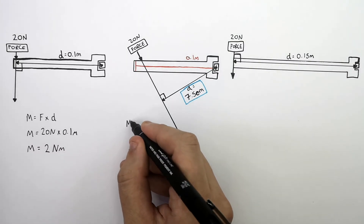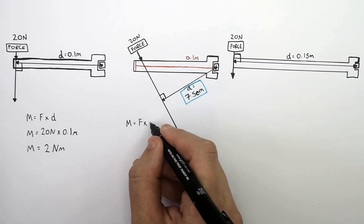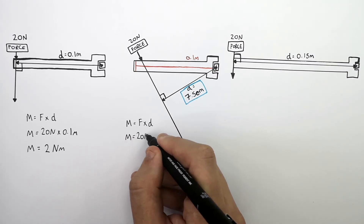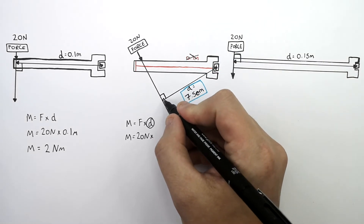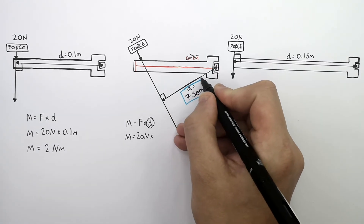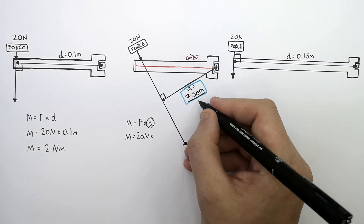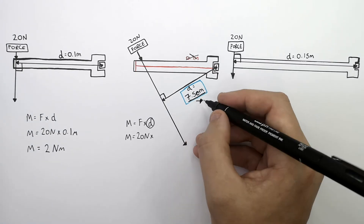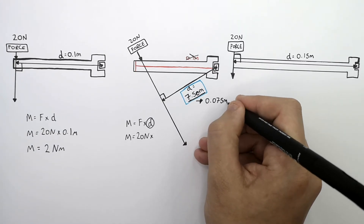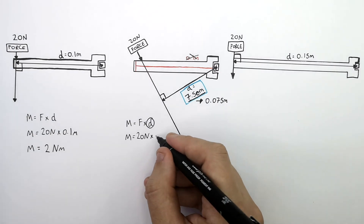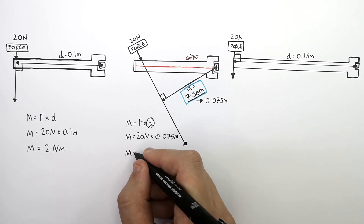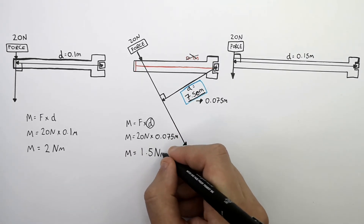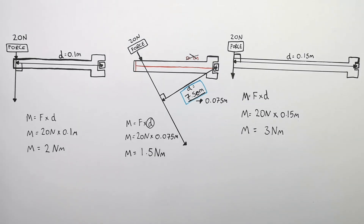To calculate the anti-clockwise moment, recall M equals F times D. M equals 20 Newtons times D — but it's not the distance of the spanner handle; it's the perpendicular distance from the line of action of the force to the pivot, which is 7.5 centimeters. Converting 7.5 centimeters to 0.075 meters: M equals 20 Newtons times 0.075 meters, giving an anti-clockwise moment of 1.5 Newton meters. The anti-clockwise moment for the final spanner is 3 Newton meters.